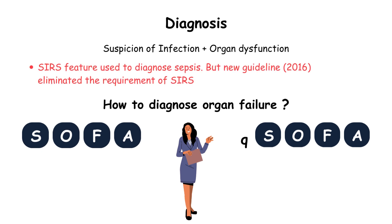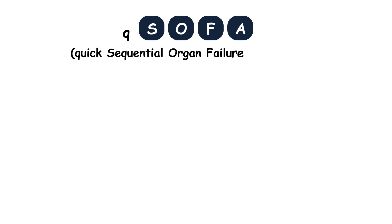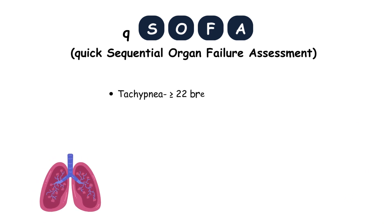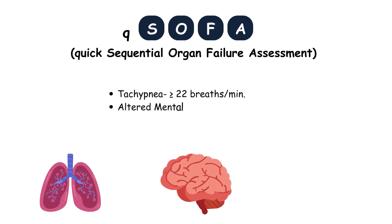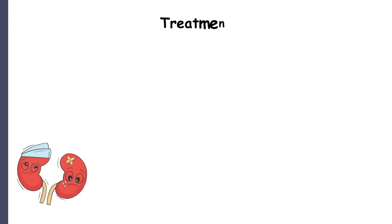Currently we use qSOFA and SOFA for the diagnosis of organ failure. SOFA requires two or more factor changes to diagnose organ dysfunction. The easier way of assessing this is using the qSOFA score, which uses tachypnea with respiratory rate more than 22, altered mental state with GCS less than 14, and systolic blood pressure less than 100. Two out of three indicate a patient with greater risk of adverse outcome in the context of infection.